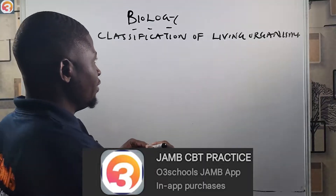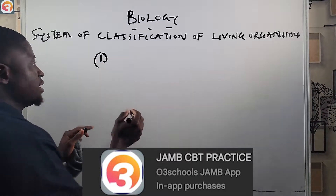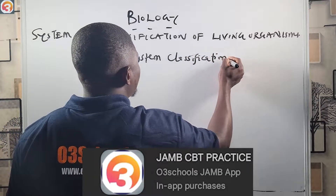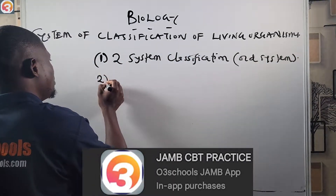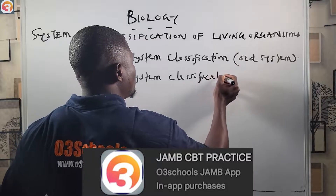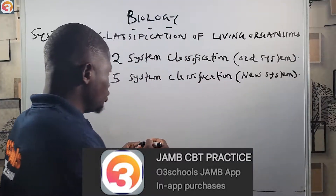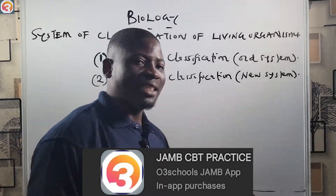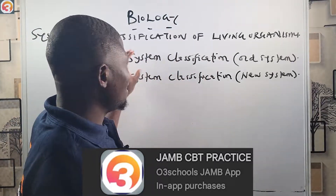There are two basic systems of classifying living organisms. The first is the two-kingdom classification, which is the old system, and then we have the five-kingdom classification, which is the new system. In this episode, we are going to look at the two-kingdom classification.